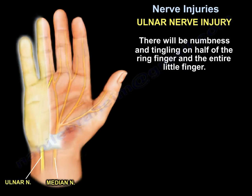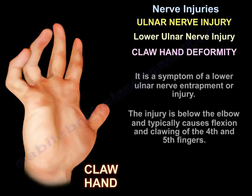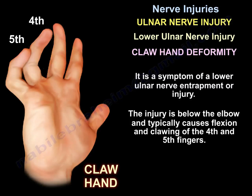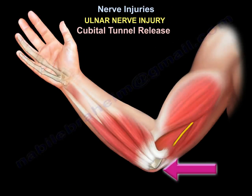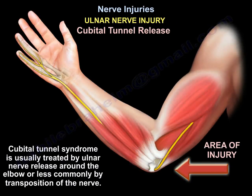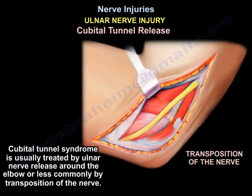There will be numbness and tingling on half of the ring finger and the entire little finger. Claw hand deformity is a symptom of lower undernerve entrapment or injury. The injury is below the elbow and typically causes flexion and clawing of the fourth and fifth fingers. Cubital tunnel syndrome is usually treated by undernerve release around the elbow, or less commonly with transposition of the nerve.